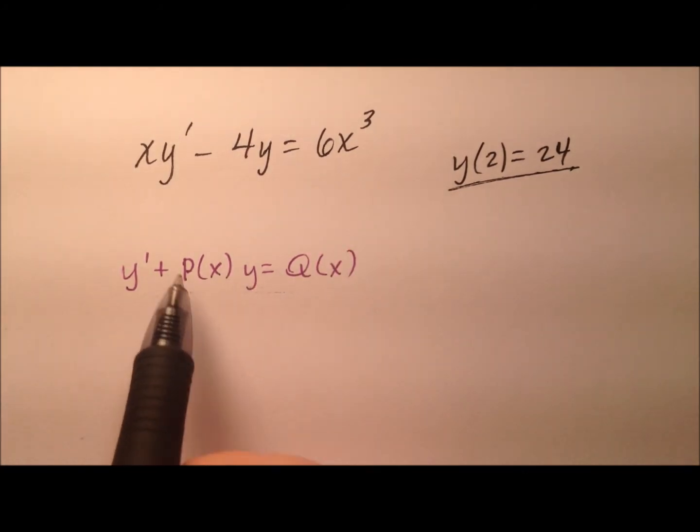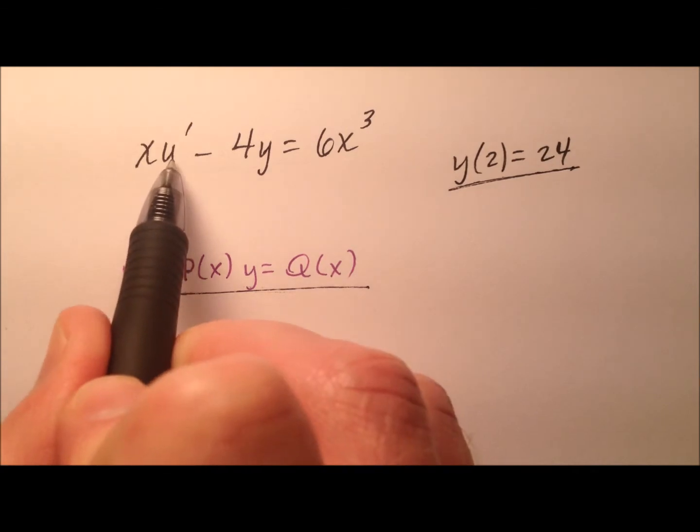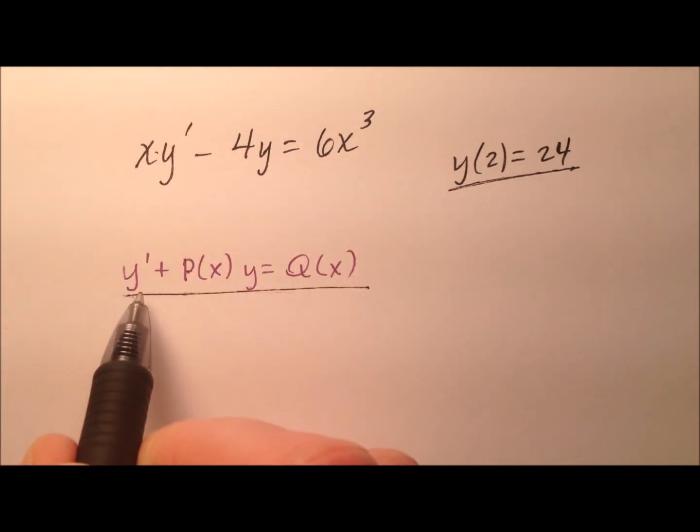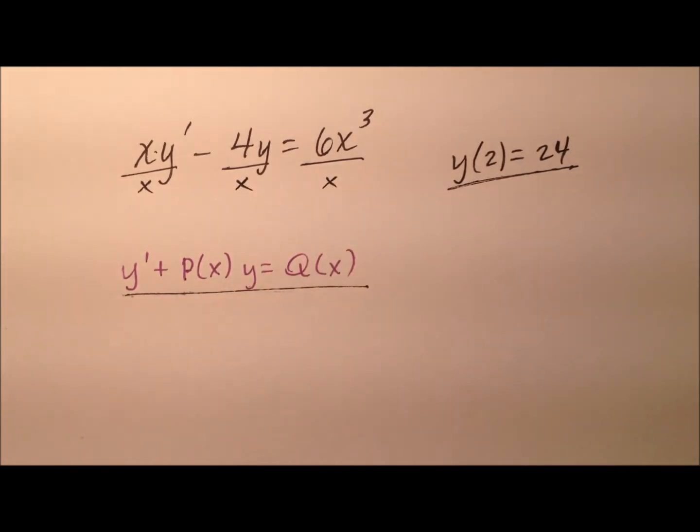Well, let's get to work. So in order to write this equation in this linear form that we want, our y prime has to be all by itself. And it looks like it's being multiplied by x up here, so let's go ahead and divide every single term by x.